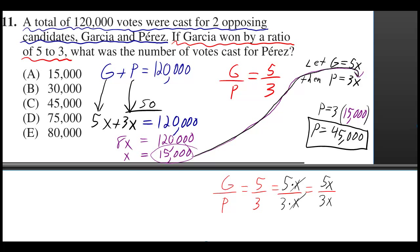So you take the 15,000 and you plug it in over the 3, which means you multiply it by 3. So Perez got 45,000 votes. And then you could figure out that Garcia got 75,000 by doing 5 times 15,000. And then you add up 75,000 and 45,000, and it does check, because it equals 120,000.